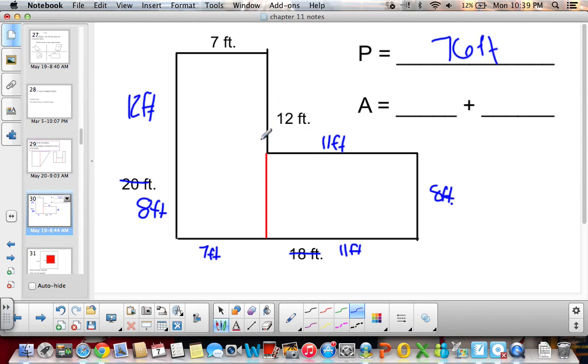The area, we can find the area of this rectangle right here. So this area would be this whole side and that whole side, which is 20 times the other side, which is 7. 20 times 7 is 140 feet squared. The area of this rectangle would be 11 times 8, because I know that both sides is 11 and 8. So 11 times 8 equals 88 feet squared.